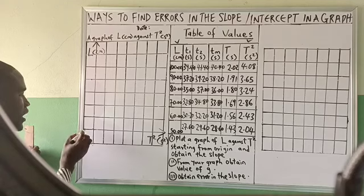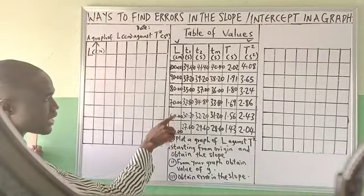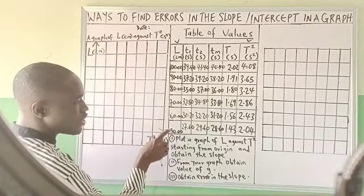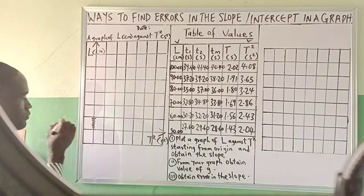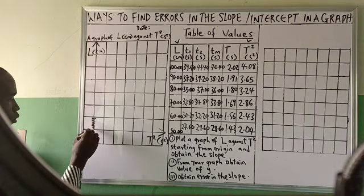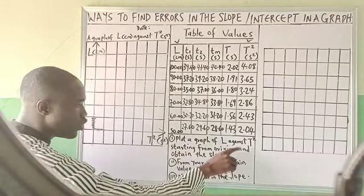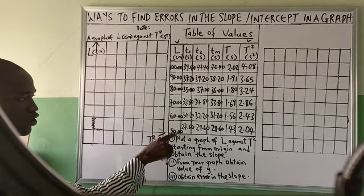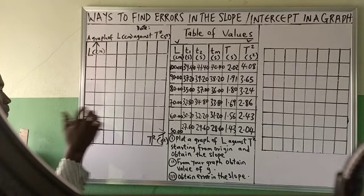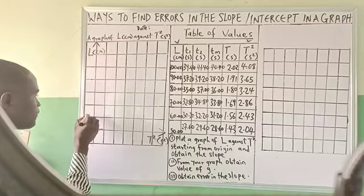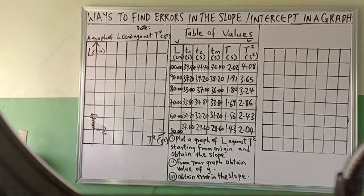Instead of writing 0, 0 — since the figures are not close to zero — put a zigzag symbol. That means you are obeying the rule of starting from the origin, but you didn't write it because the lowest number is not close to zero. That is what this symbol means. So what you will now do is start from 50 on the L axis, and start from 2 on the T squared axis.